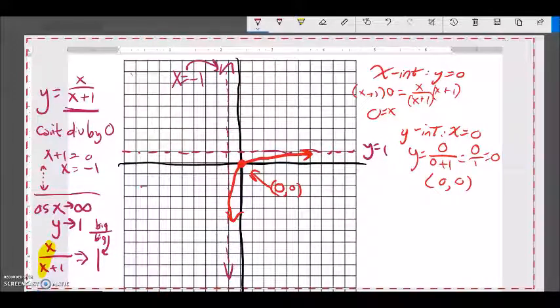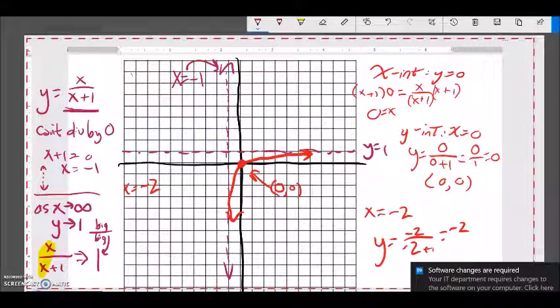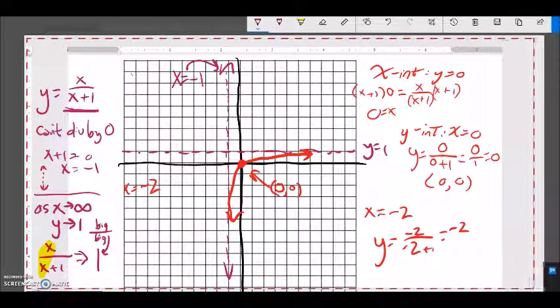Let's try to plug in negative 2 for x and see what happens. I'll do it over here so it's easier to see. So, x equals negative 2. If I plug that in, y would equal negative 2 divided by negative 2 plus 1, which would be negative 2 over negative 1, which is positive 2.